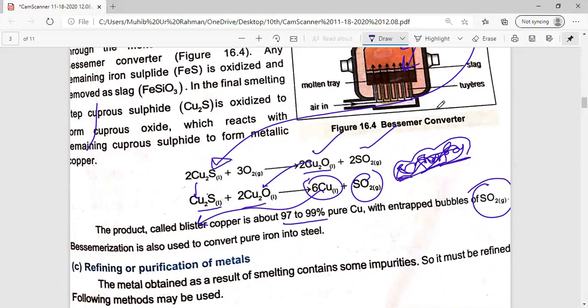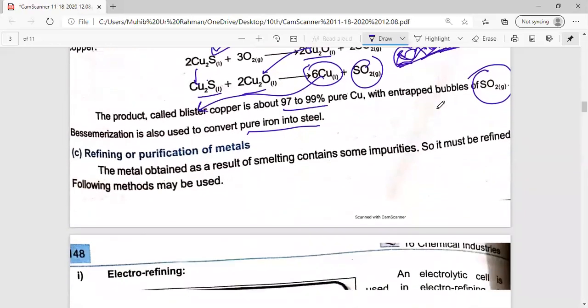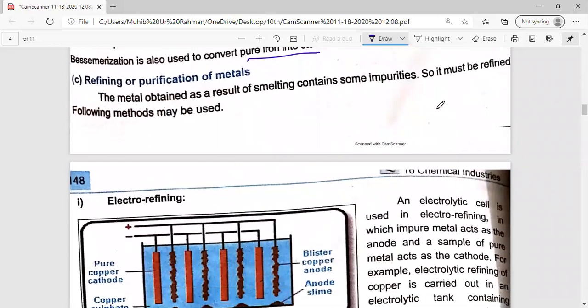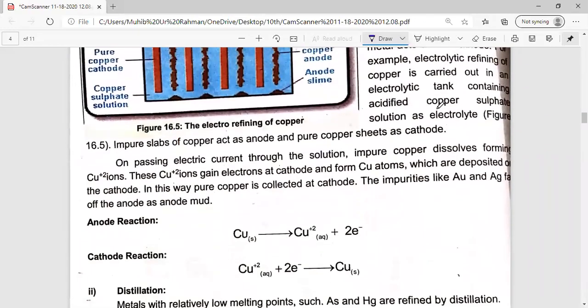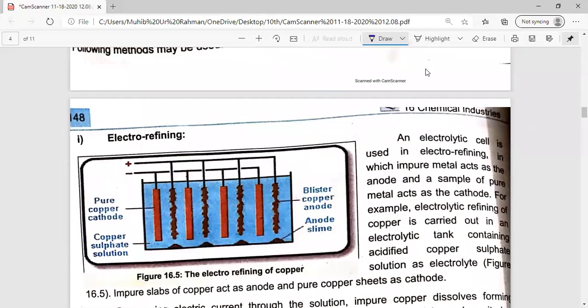This Bessemerization and Bessemer converter we can also use for pure iron steel conversion. So after that we have refining or purification of metal. We will discuss this in detail in the next lecture. Till then, take care of yourself, Allah hafiz.